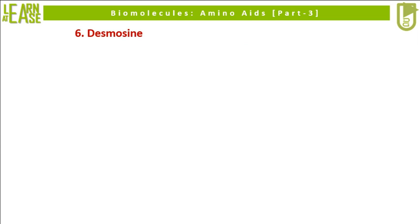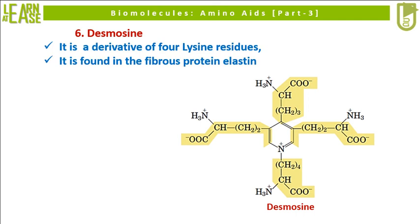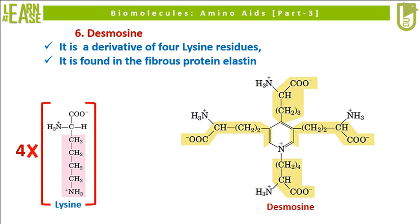The sixth uncommon amino acid is desmosine; its structure is shown below. It is a derivative of 4 lysine residues. When 4 monomers of lysine are condensed, desmosine is formed. Desmosine is found in the fibrous protein elastin.